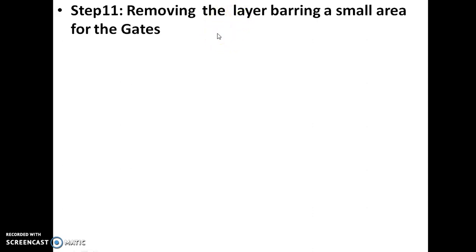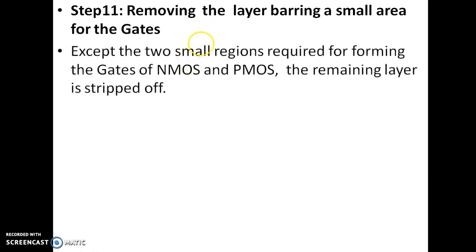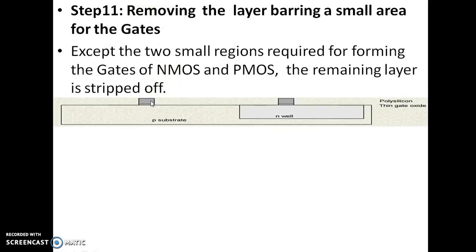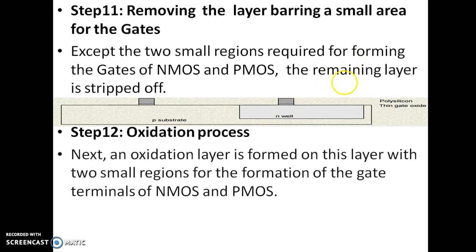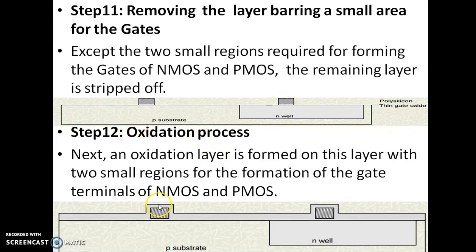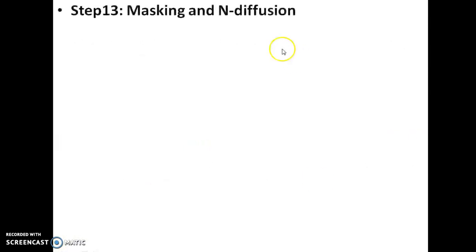We need to create the gate terminals, so we remove some portions except the two small regions required for forming the gates of NMOS and PMOS — the remaining gate oxide and polysilicon layers are stripped off. This leaves the gate terminal for the N-type MOSFET and the gate terminal for the P-type MOSFET. Next, an oxidation layer is formed over the structure, with the two small regions for the gate terminals of NMOS and PMOS remaining.